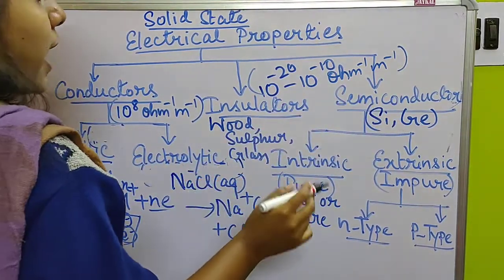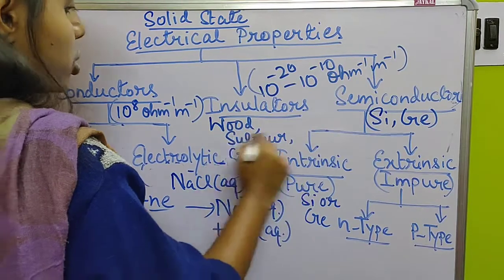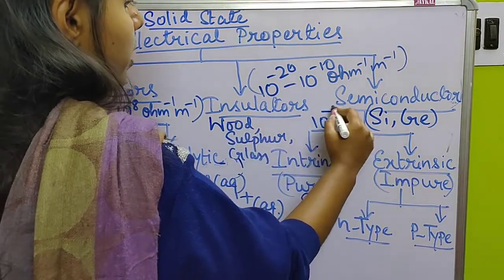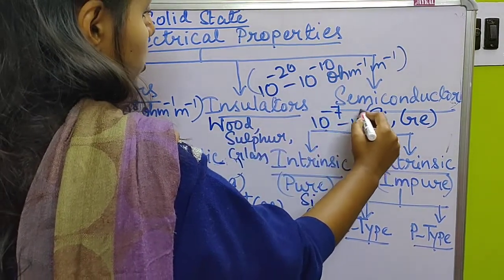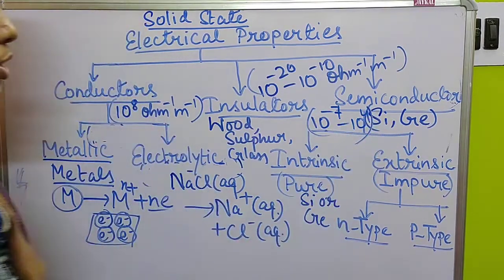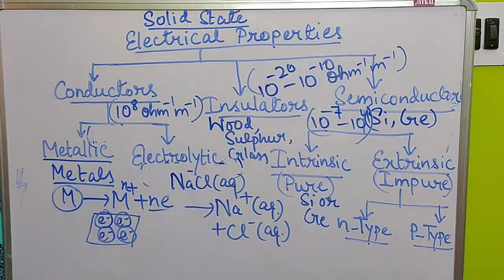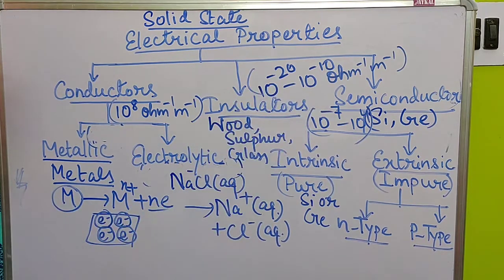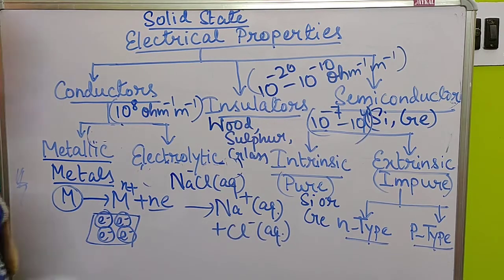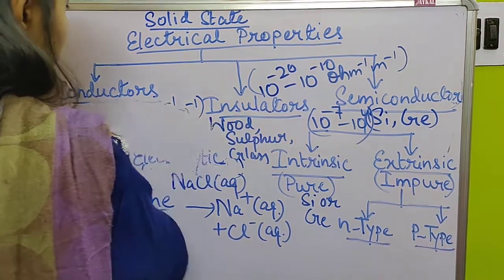For semiconductors, the conductivity value lies in the range of 10⁻⁷ to 10⁴ ohm⁻¹ metre⁻¹. The unit for all is ohm⁻¹ metre⁻¹.